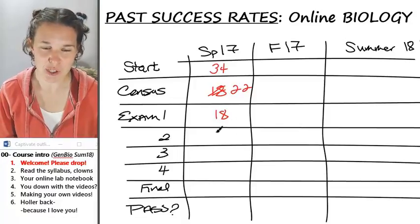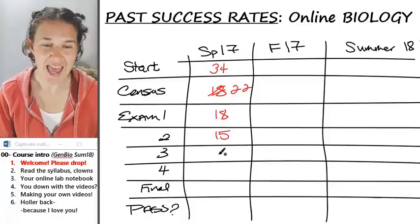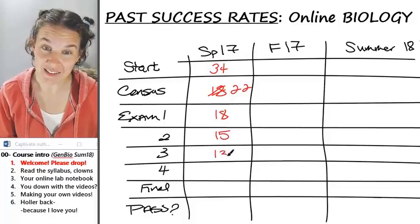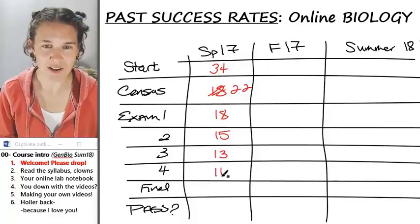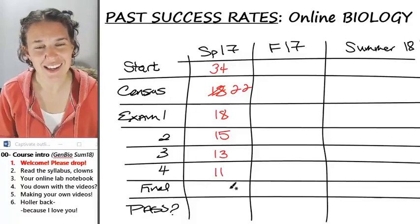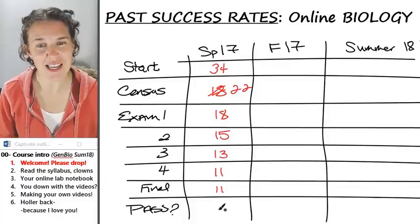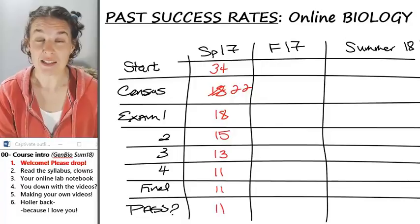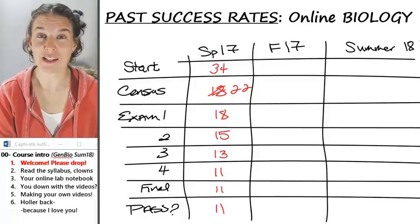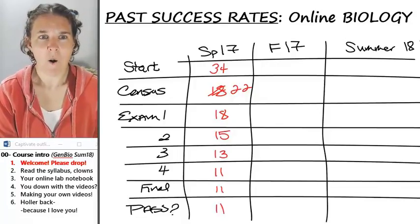At exam two, we had 15. At exam three, we had 13. At exam four, we had 11. And 11 took the final exam, and 11 passed the class. That is, from a teacher perspective, horrible.